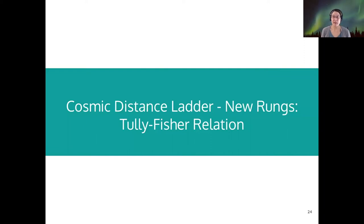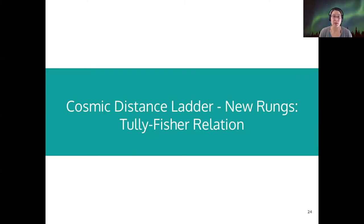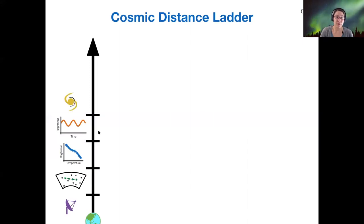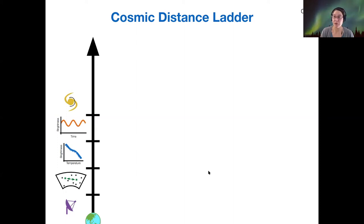We're going to apply this in a new way than we did with variable stars, but that same principle is going to apply to the new rung, which is the Tully-Fisher relation. We'll use a rotating galaxy symbol for it, because that's exactly what we're doing — looking at the rotation of a galaxy.